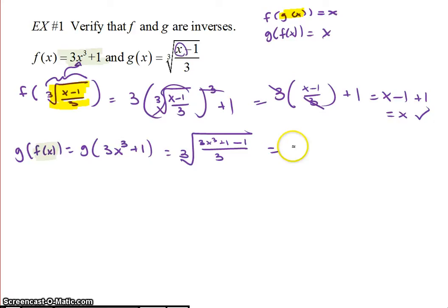So my 1s cancel, so the 1 and the 1 cancel, so I have 3x cubed over 3. Now the 3s cancel, so this is the cube root of x cubed, and again, the cube root and the x cubed cancel each other out, so we're left with just x. So now that we've verified that f and g are inverses - to verify, you want to compose both directions and make sure you get x out.